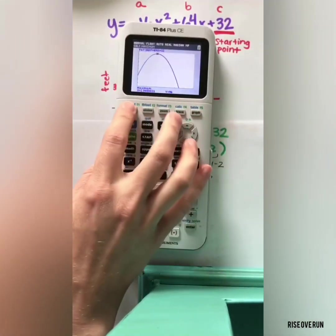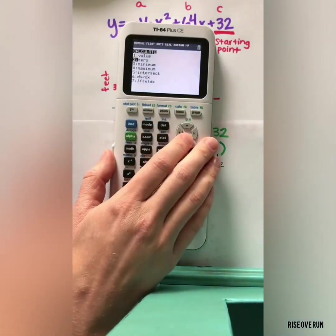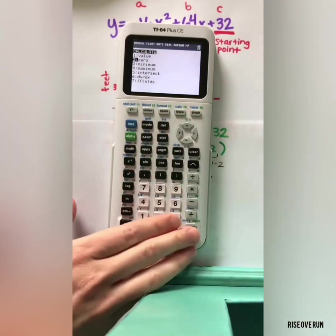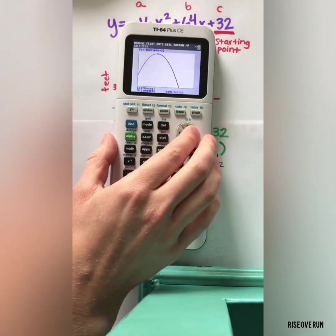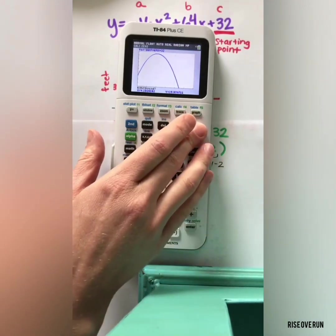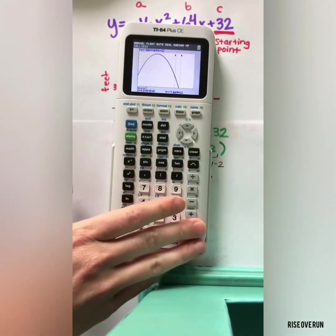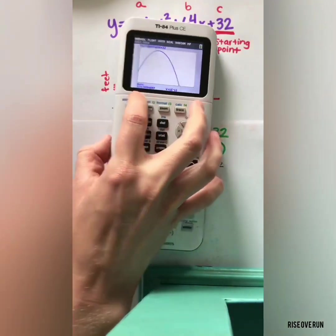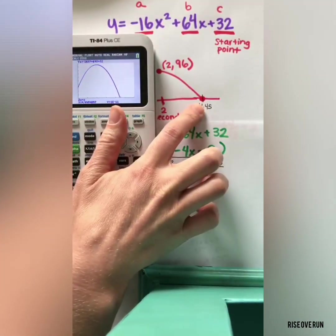We can also use this to find a zero. Again, you want to be sure you're on the left, and then to the right and hit guess, and it will give us that zero value.